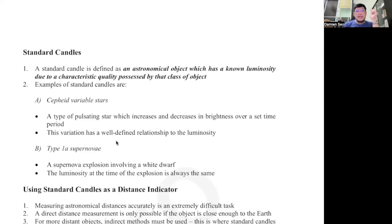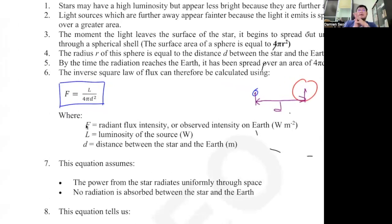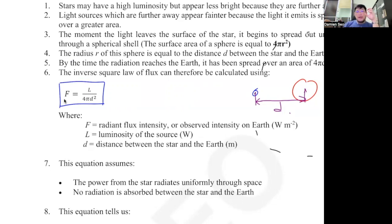So why do we want to know all these things? Based on what we just learned from the formula, think carefully — astronomers always say this galaxy is how many million light years away from the Earth. How do they know? Because if they can detect a supernova or Cepheid variable star in that faraway galaxy, then they will know the luminosity. Then they detect the radiant flux intensity at the Earth coming from that supernova or Cepheid variable star. So once you know the flux intensity detected here and you know the luminosity, you can substitute and find the distance between the Earth and that galaxy.